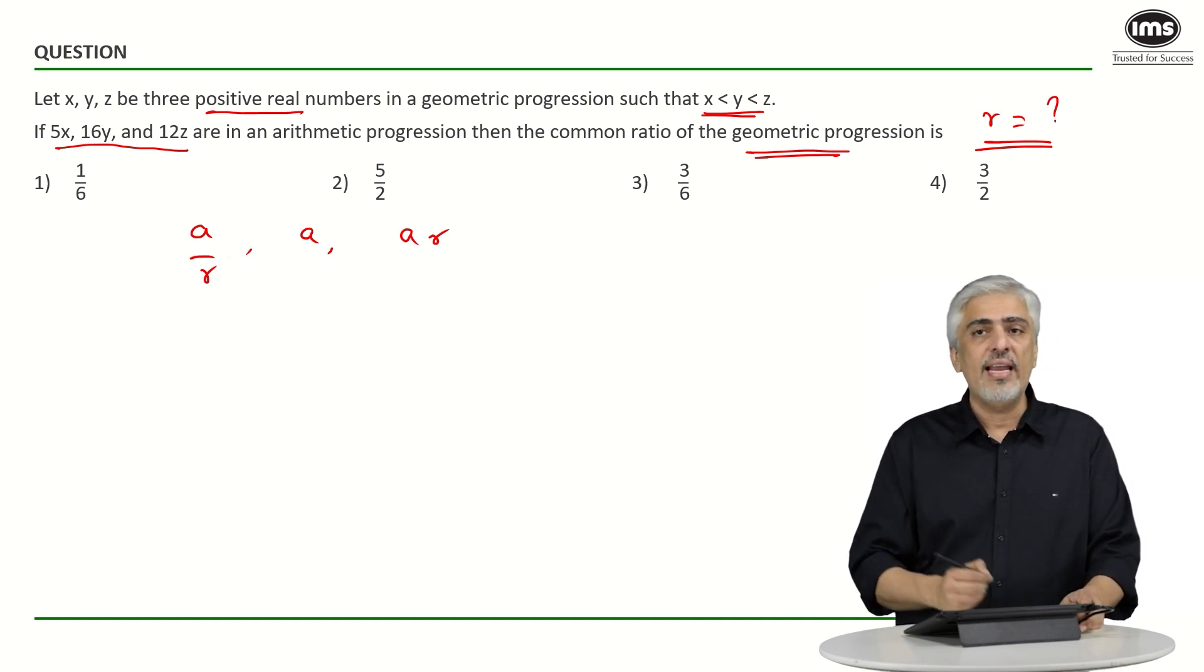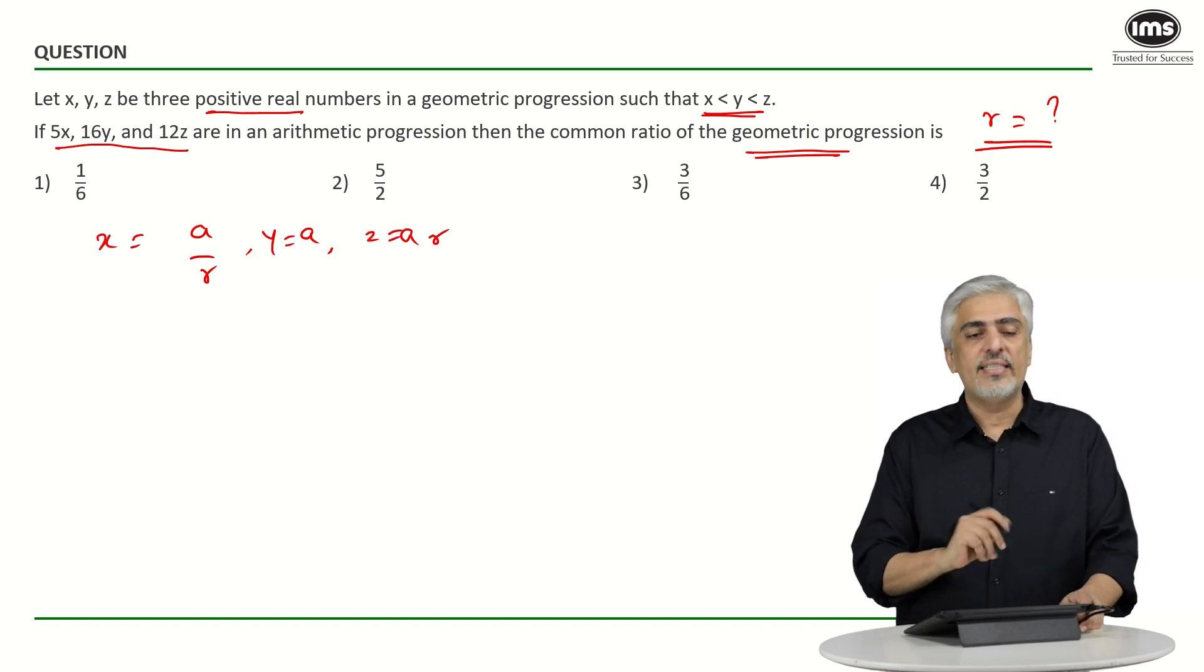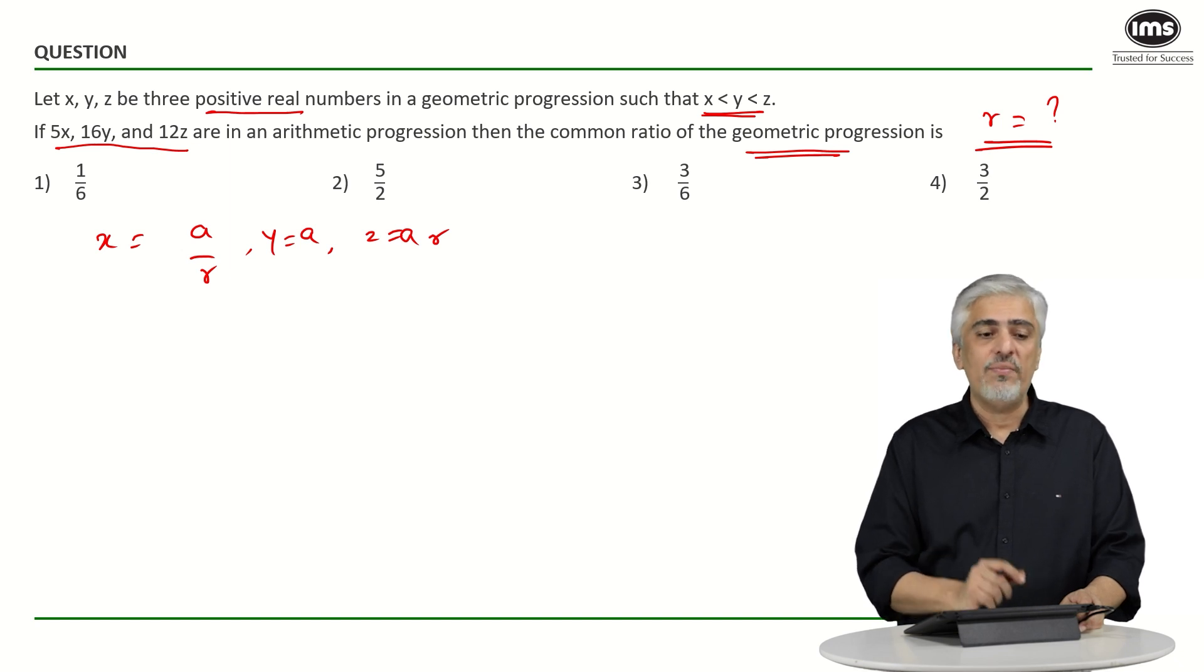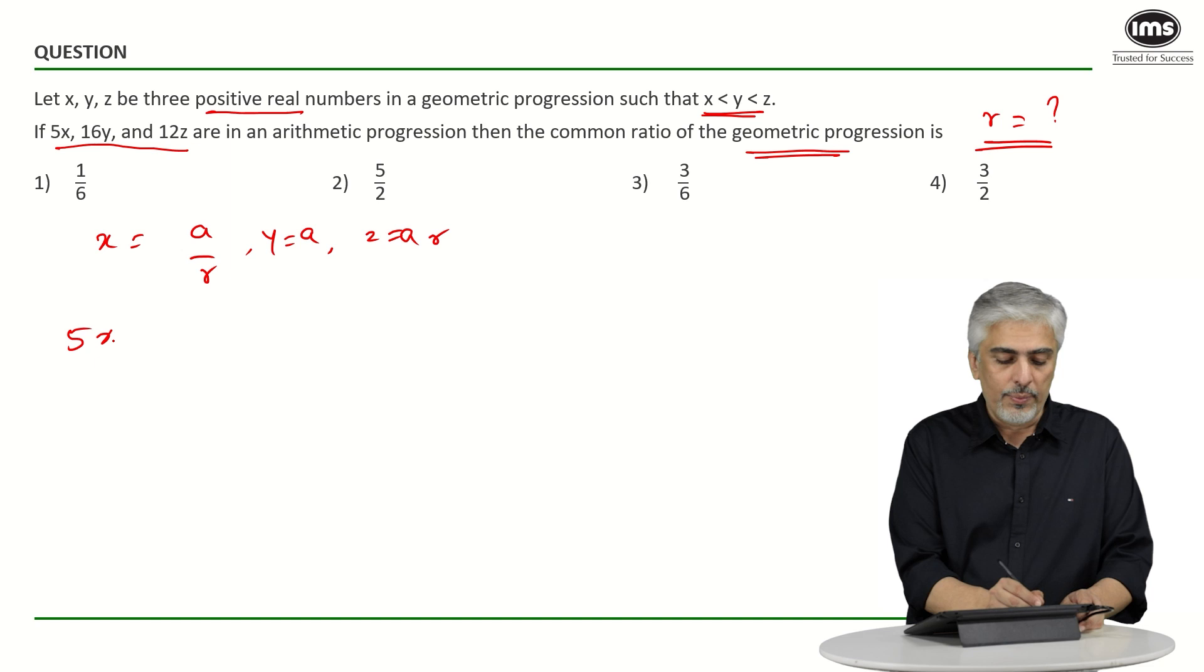So these should be your three terms: a upon r, a, and ar. These are the values you could take for x, y, and z. What have they said? They've said 5x, 16y, and 12z are in AP. When three terms are in AP, the first term plus last term will be twice the middle term.